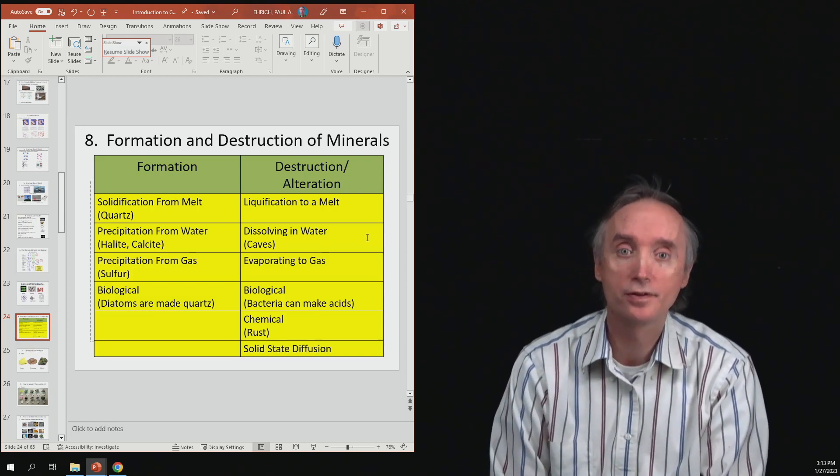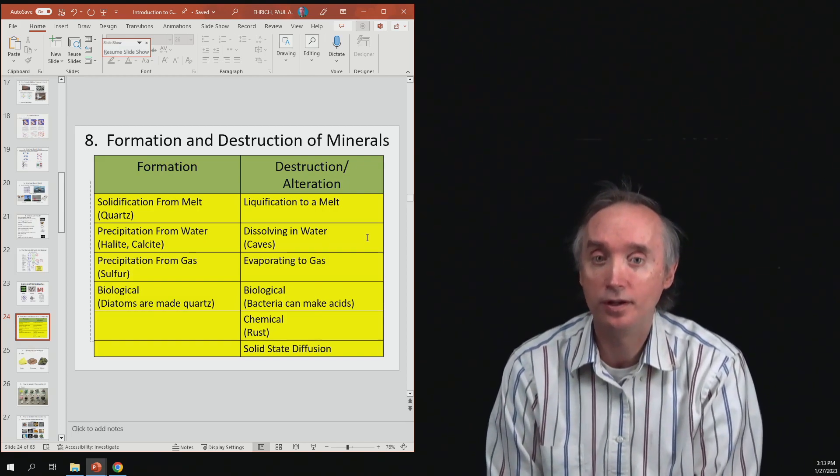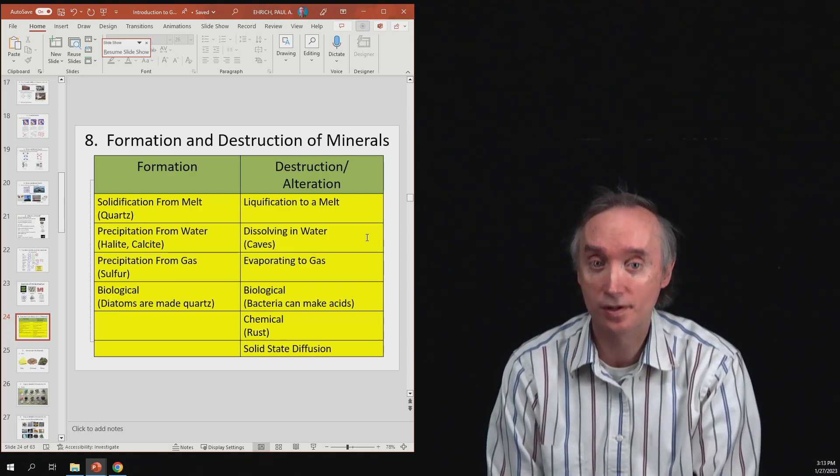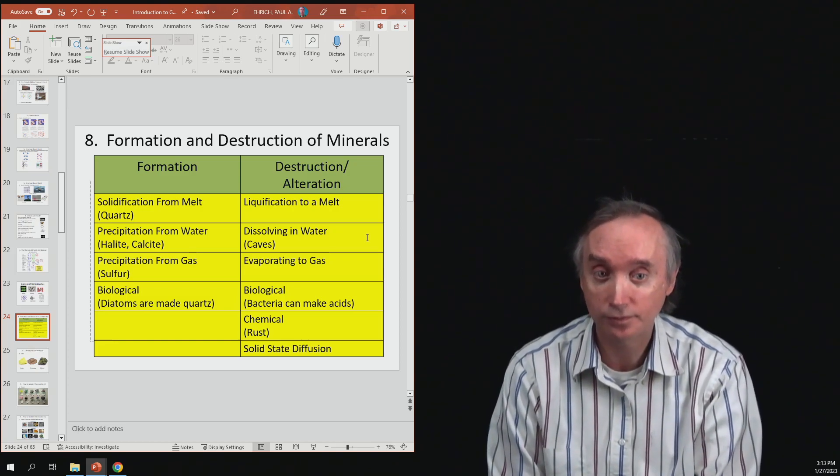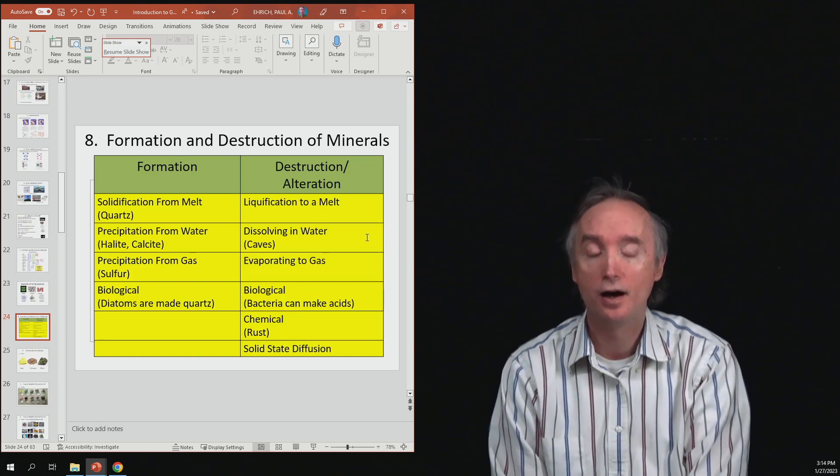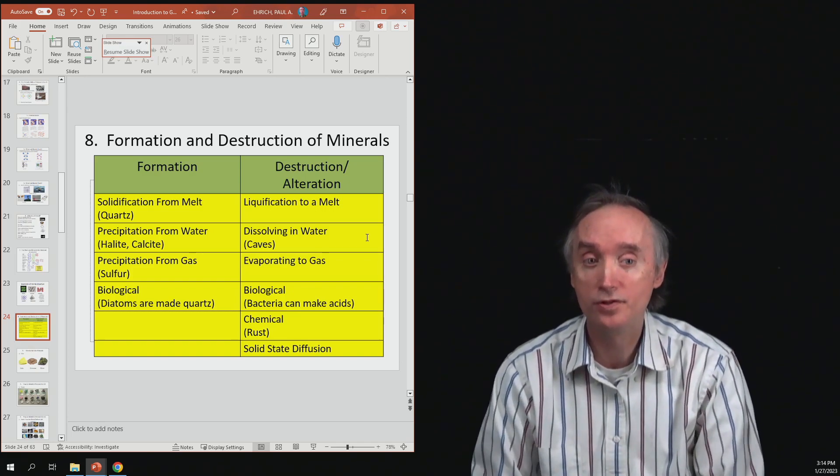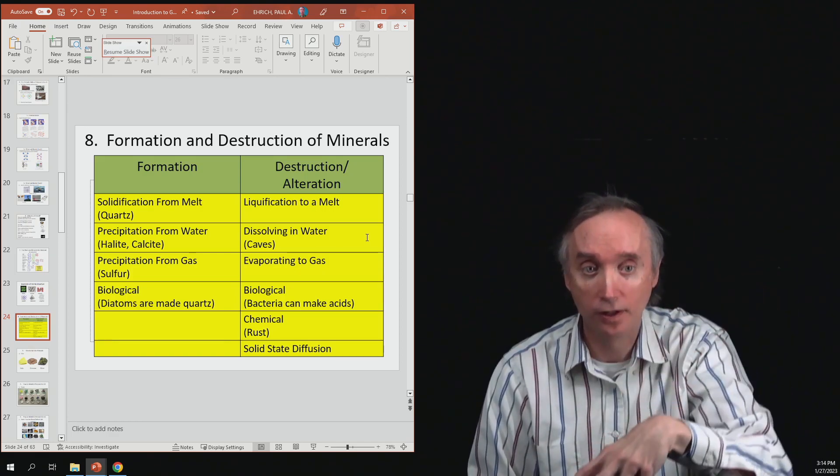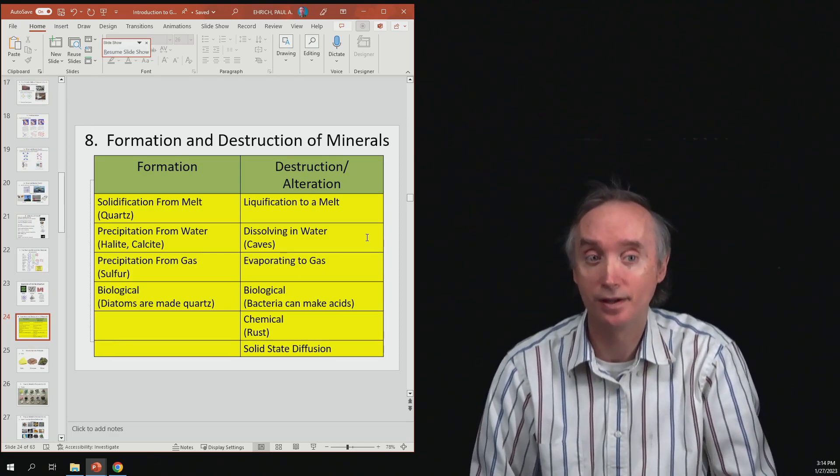Now, look over there to the side, and so if we can create a mineral from a precipitate, can we also destroy one? And yes, we can. So, for example, what can happen is once you have the limestone, water can percolate through it, and if that water is acidic,